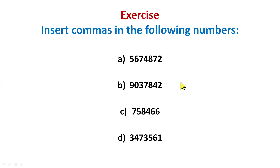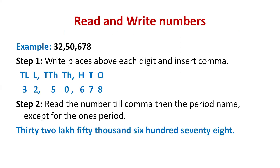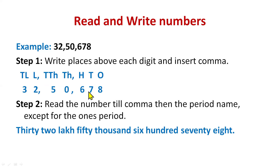Now let's start further — here we are going to learn about reading and writing big numbers, specifically seven digit numbers. You just need to remember two steps: first, write the places above each digit, and second, insert the comma. Write the number again and start writing places above it — above the rightmost digit write ones, then tens, hundred, thousand, ten thousand, lakh, ten lakh.